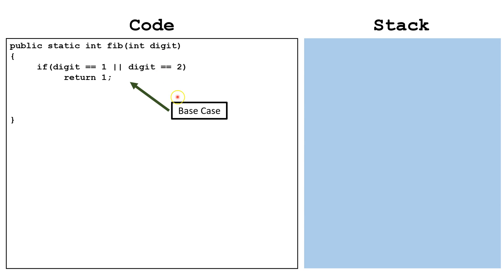We start by writing the base case. If we're looking for digit 1 or digit 2, we're simply going to return 1, because digit 1 and 2 are always 1.